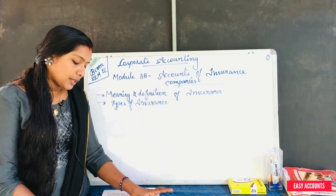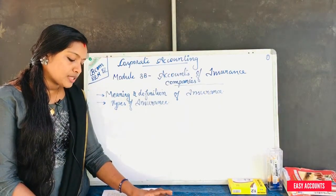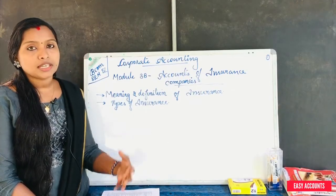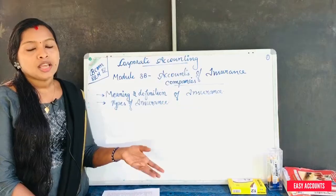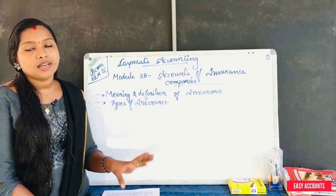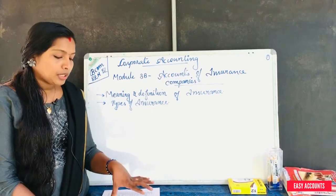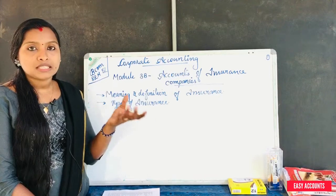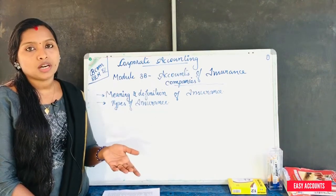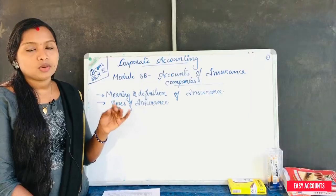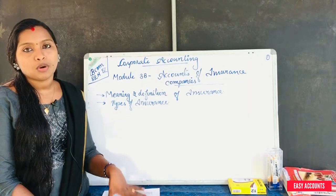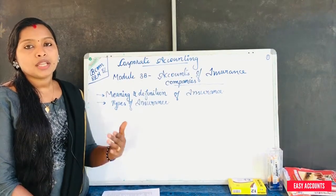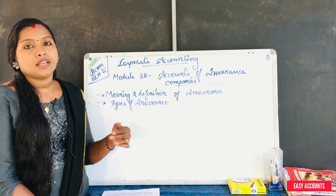The consideration for such a guarantee or undertaking is the payment of a small amount at regular intervals. What we receive as consideration is called the premium amount. This small amount of money is paid on an annual, half-year, quarter, or monthly basis according to the policy.